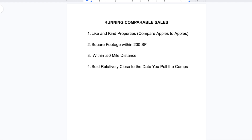Finally, you also want to look for properties that were sold relatively close to the date that you pull the comparable sales. In this market you may go out as far as 30 days, but in markets where homes are selling slower, you may go out as much as 90 days or even six months. In some cases where populations are smaller, you may go out as much as a year. Try to look for comps that sold within a relatively short period of time from the date you actually pull them.